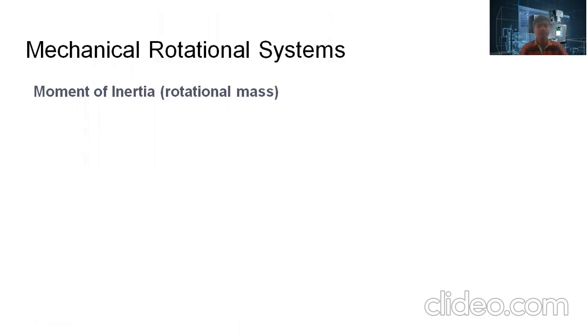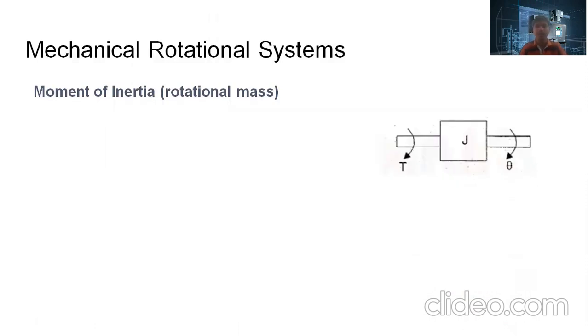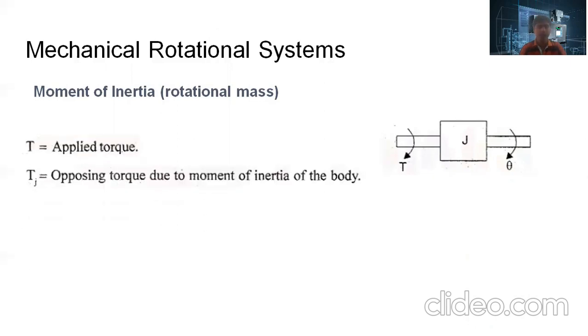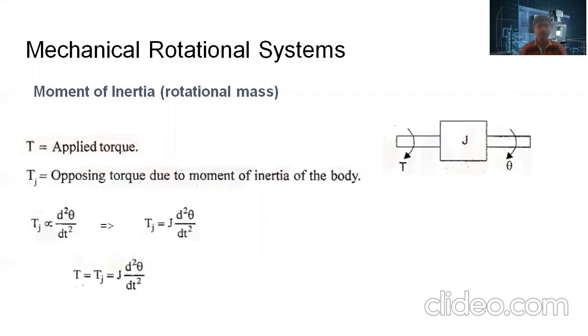Now we move on to mechanical rotational systems. Before going to the mathematical modeling, let us see the basic components of rotational systems. The first one is the moment of inertia, also called the rotational mass element. When the torque is applied on the rotational mass element, there is an angular displacement theta. The opposing torque due to the moment of inertia is directly proportional to the angular acceleration, which is the second order derivative of angular displacement. Therefore, TJ = J · d²θ/dt², and by the torque balance equation, T = TJ = J · d²θ/dt².